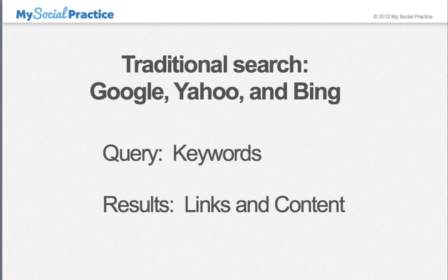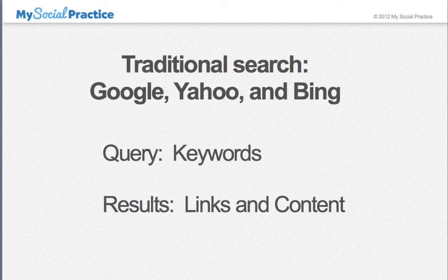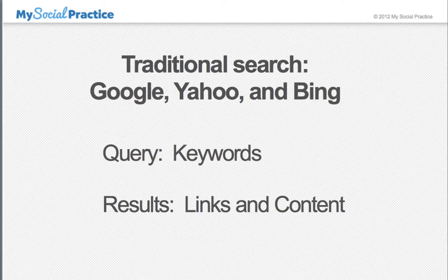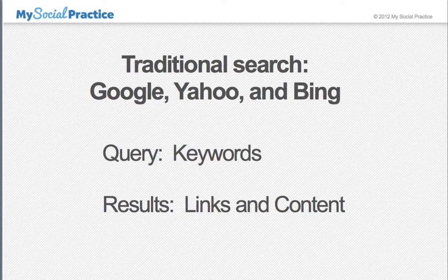The way the search algorithm works — and this is very, very basic — the query is done through keywords via the search bar. You go to the search bar and type in 'dentist in whatever city.' Google takes those keywords and relates them to your website, looking for the strength of links and content. The stronger your links and content, the higher you rank in the search engine.